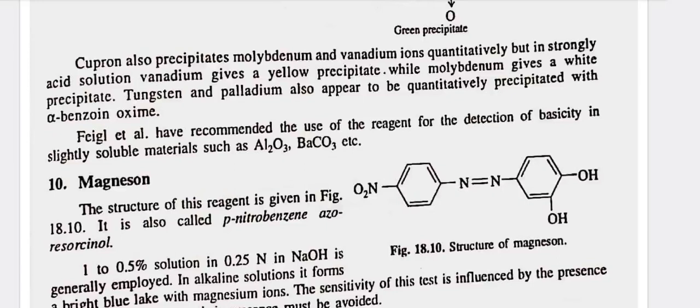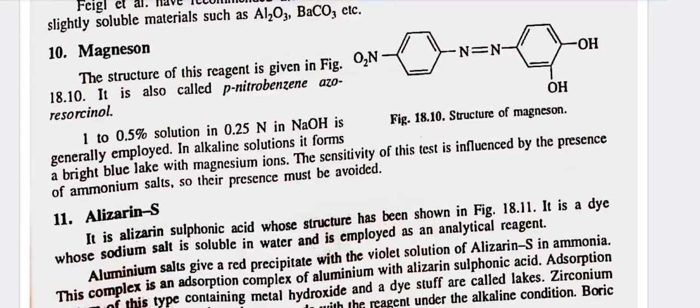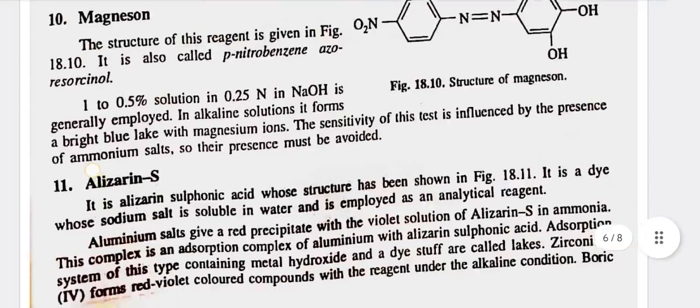The reagent has been recommended for the detection of basicity in slightly soluble materials such as Al₂O₃, BaCO₃, etc. Tenth, magnesone — the structure of this reagent is given in figure 18.10. It is also called p-nitrobenzene-azo-resorcinol. A 0.05% solution in 0.25N NaOH is generally employed. In alkaline solutions, it forms a bright blue lake with magnesium ions. The sensitivity of this test is influenced by the presence of ammonium salts, so their presence must be avoided.